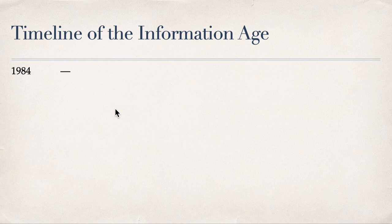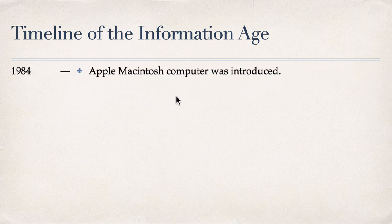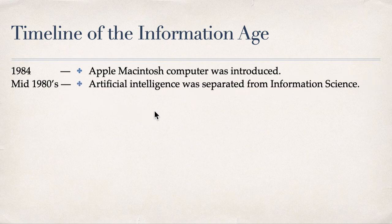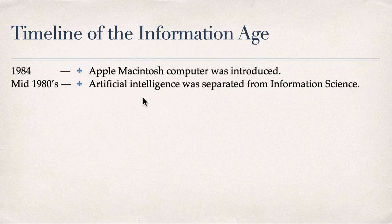In 1984, Apple created their Macintosh computer. In the mid-1980s, artificial intelligence was separated from information science as its own discipline. Previously, AI was a topic within information science, but it became a whole new separate field of study on its own.